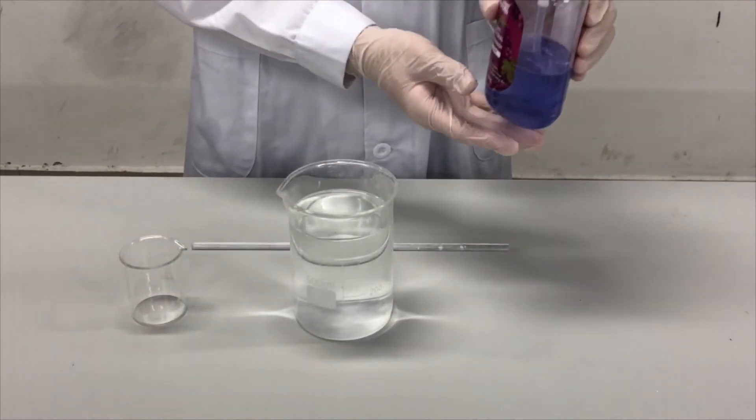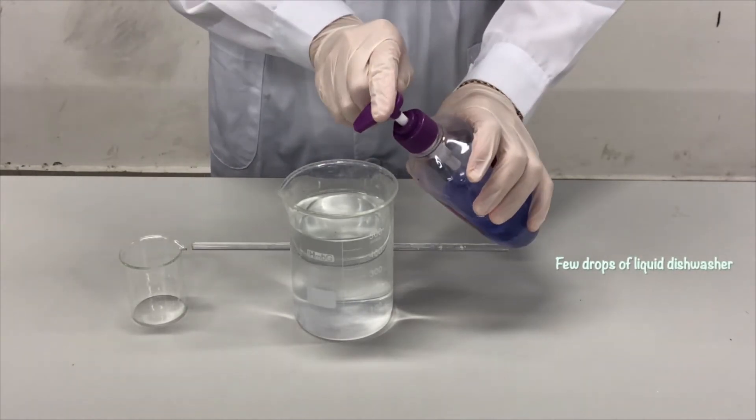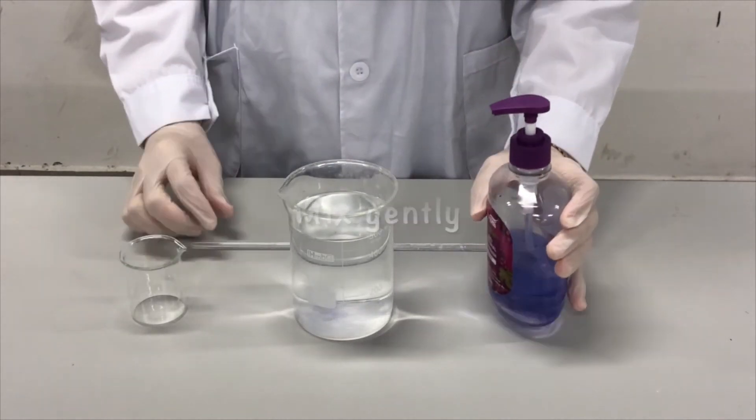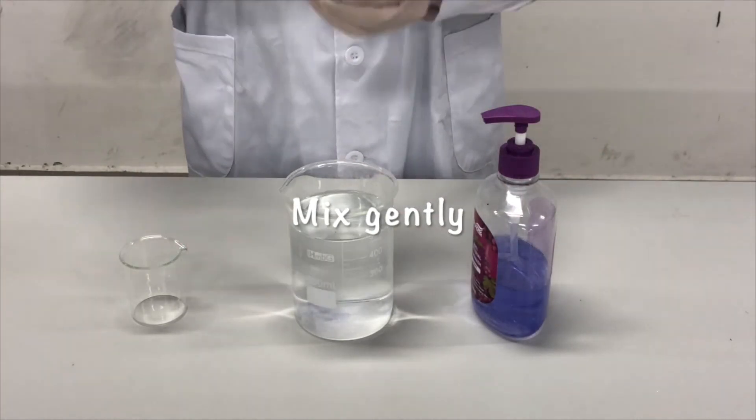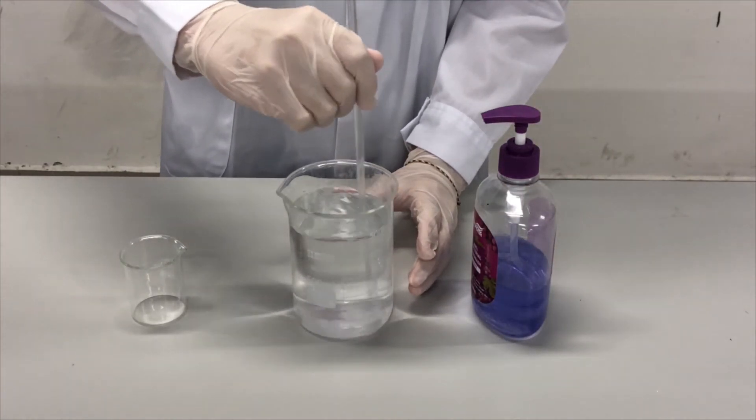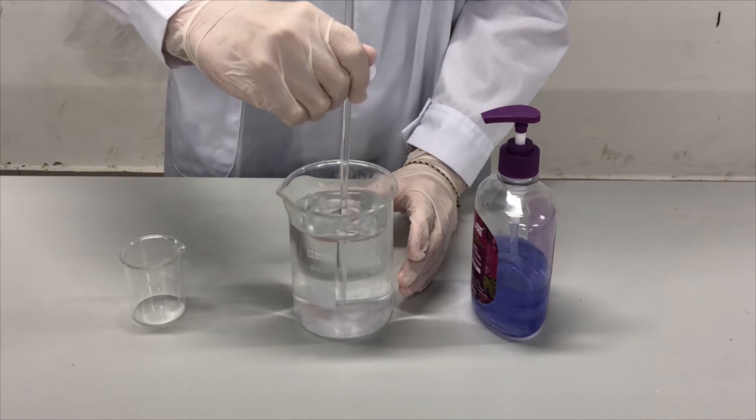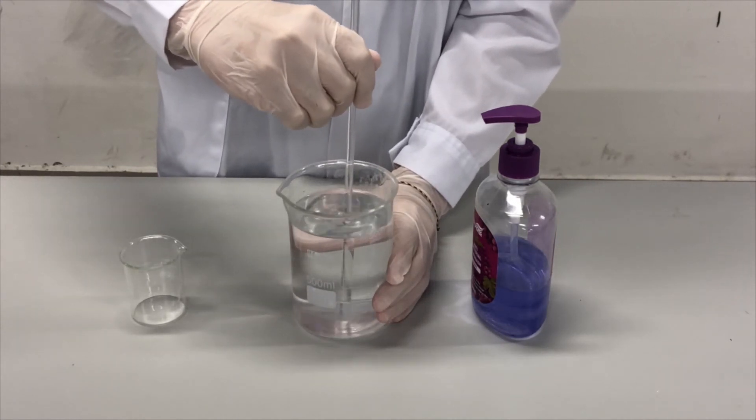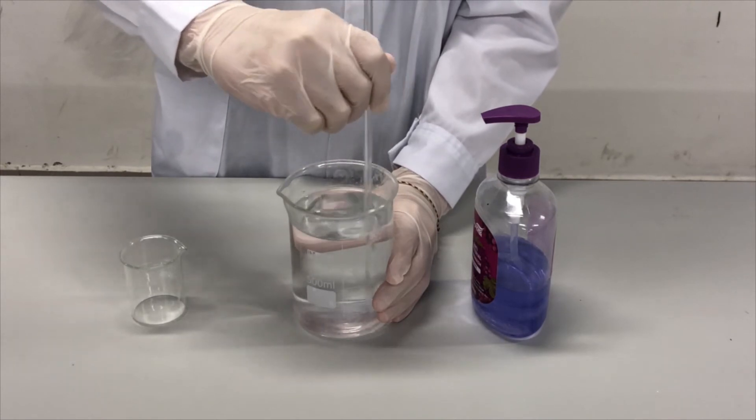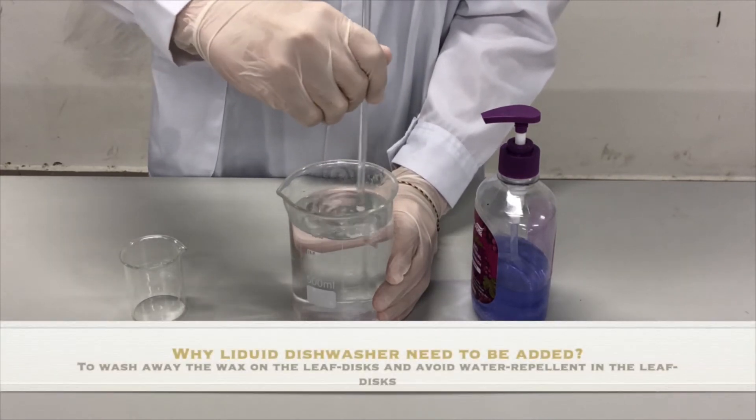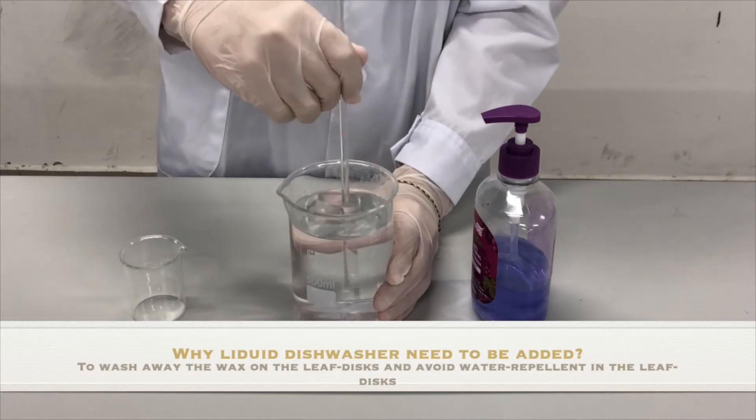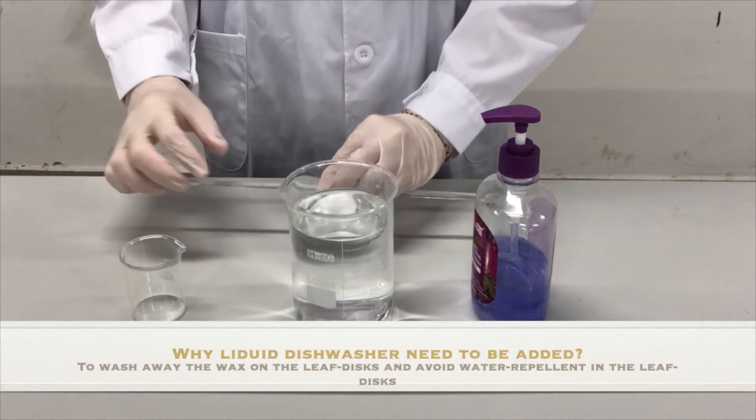Then add a few drops of liquid dishwasher and mix gently. Why do we need to put liquid dishwasher into the baking powder solution? This is to wash away the wax on the leaf disk and avoid water repellent in the leaf disk.